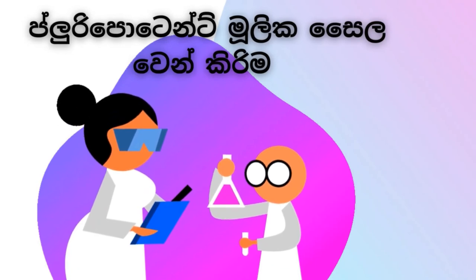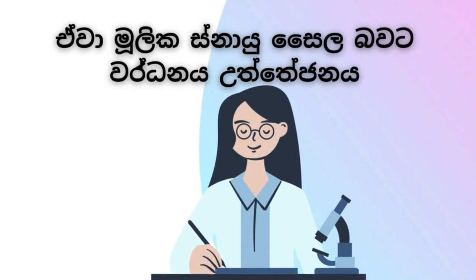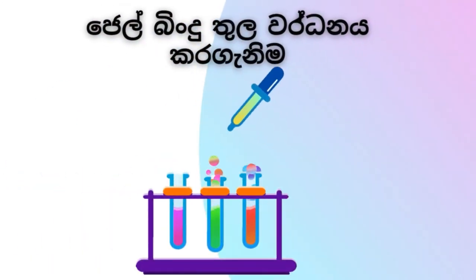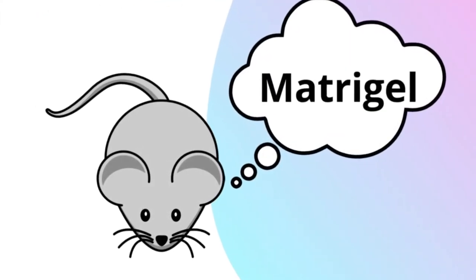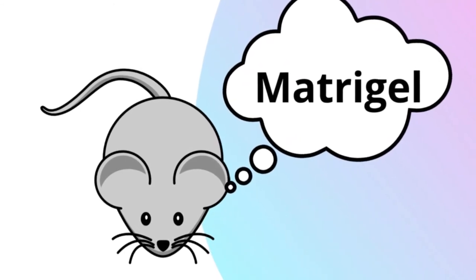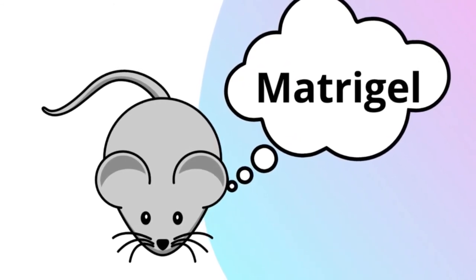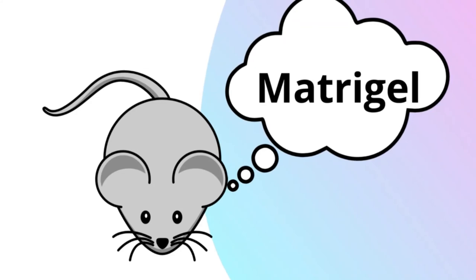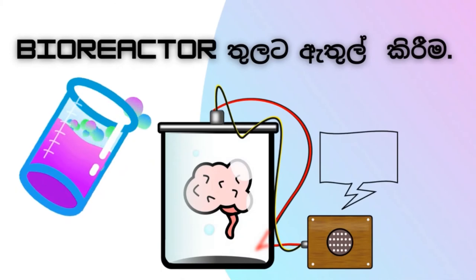The brain uses a pluripotent embryonic stem cell. This brain is a neuroectodermal molecule. This brain is a mass of water. This gel is made by Matrigel.